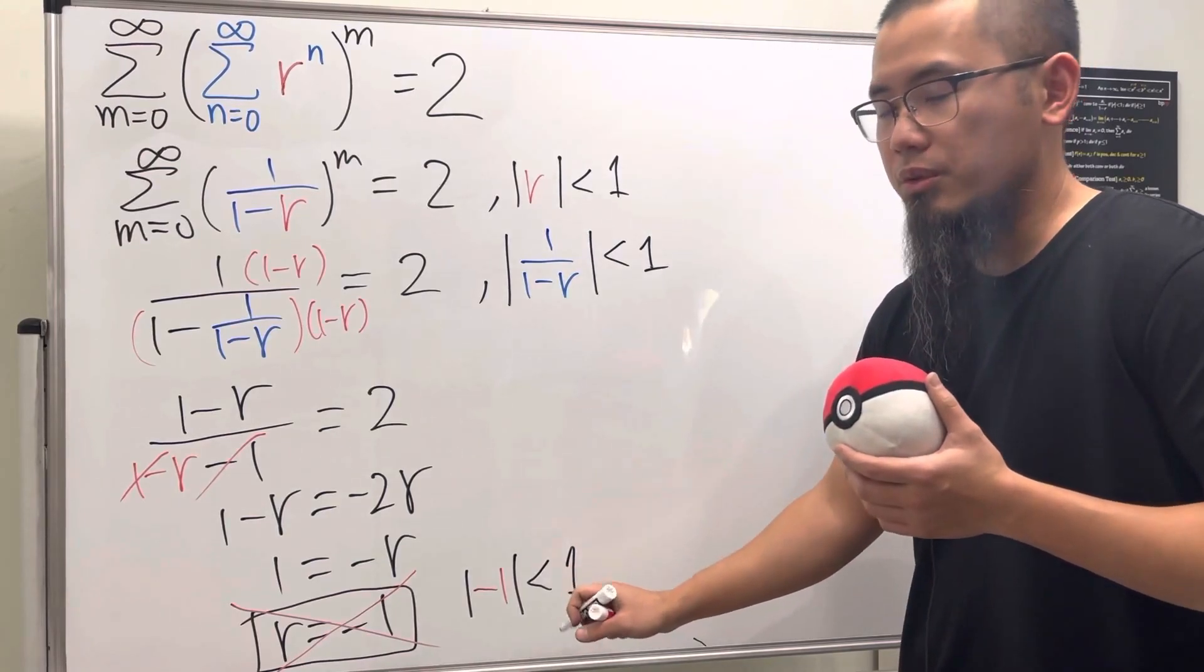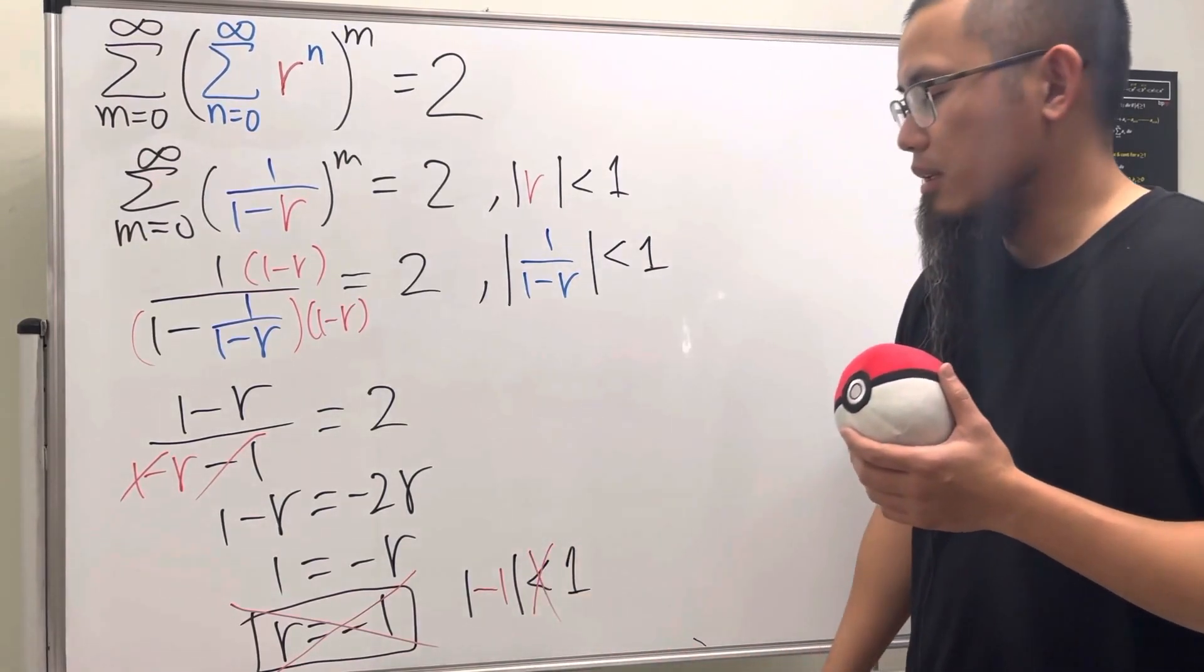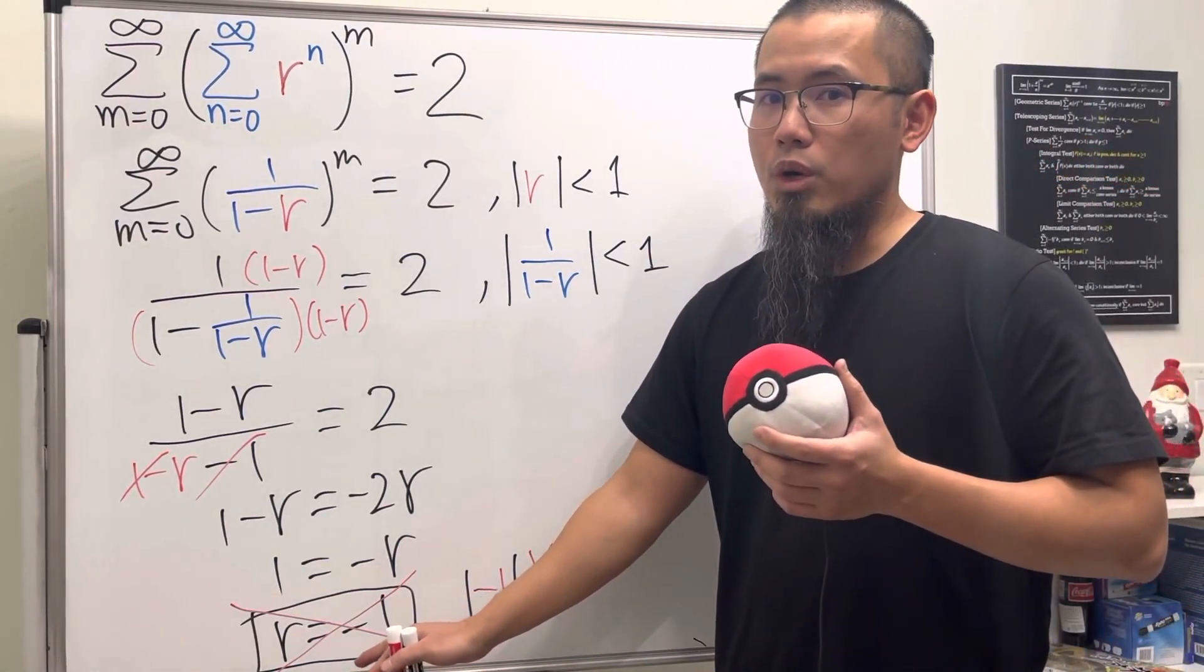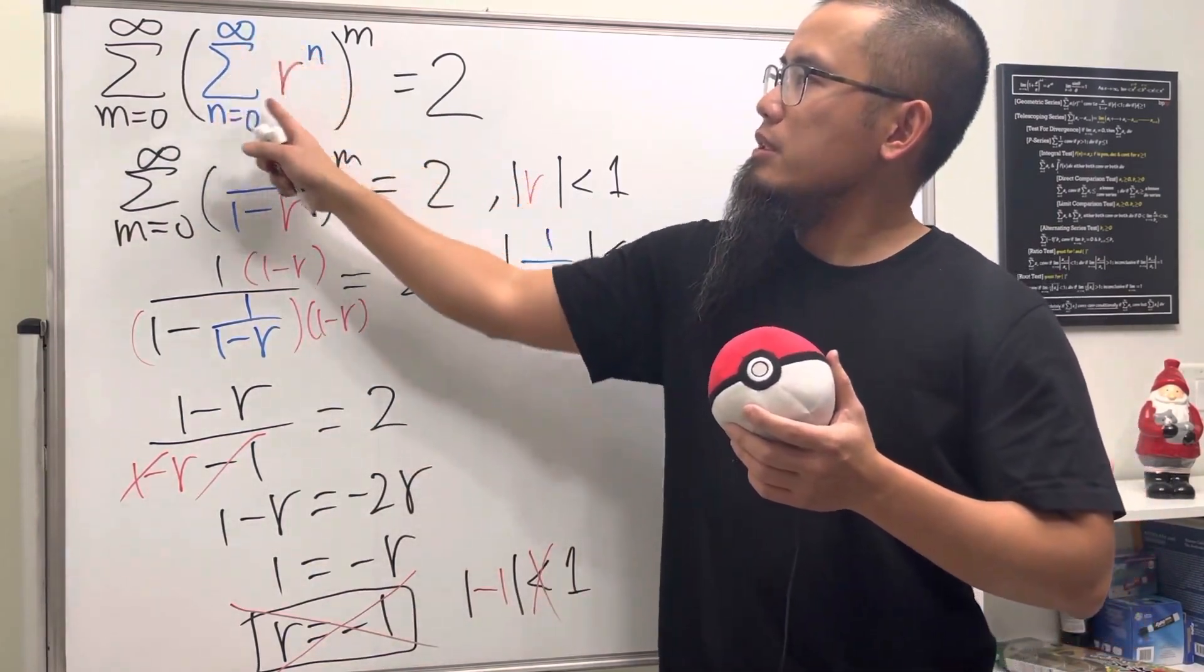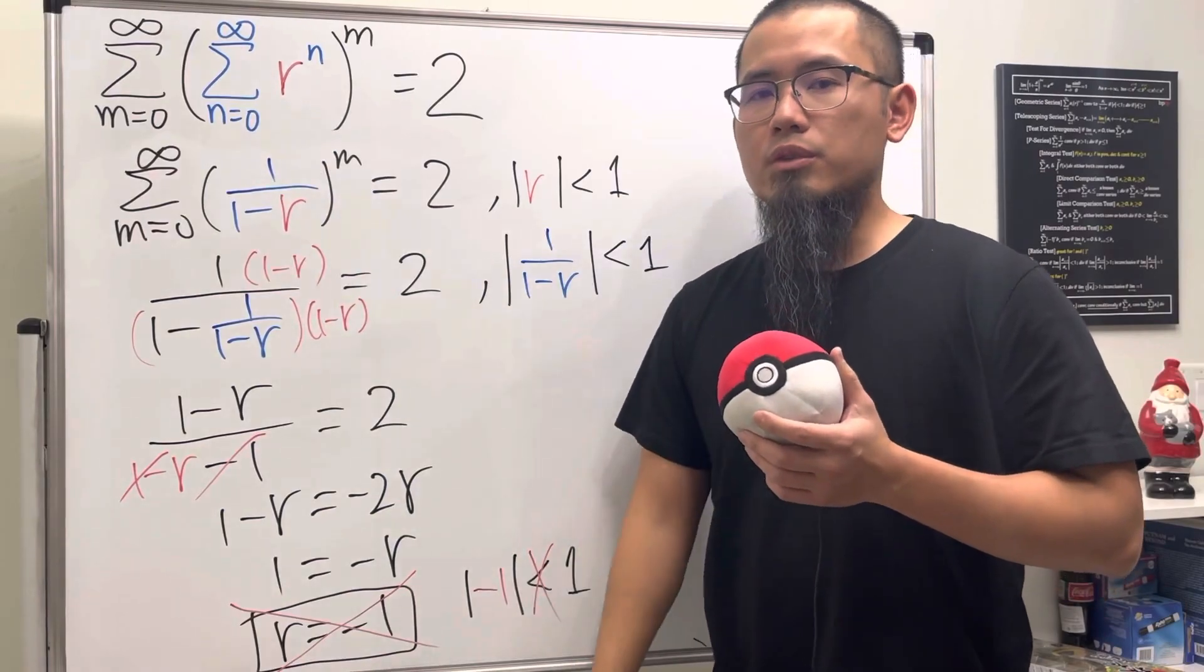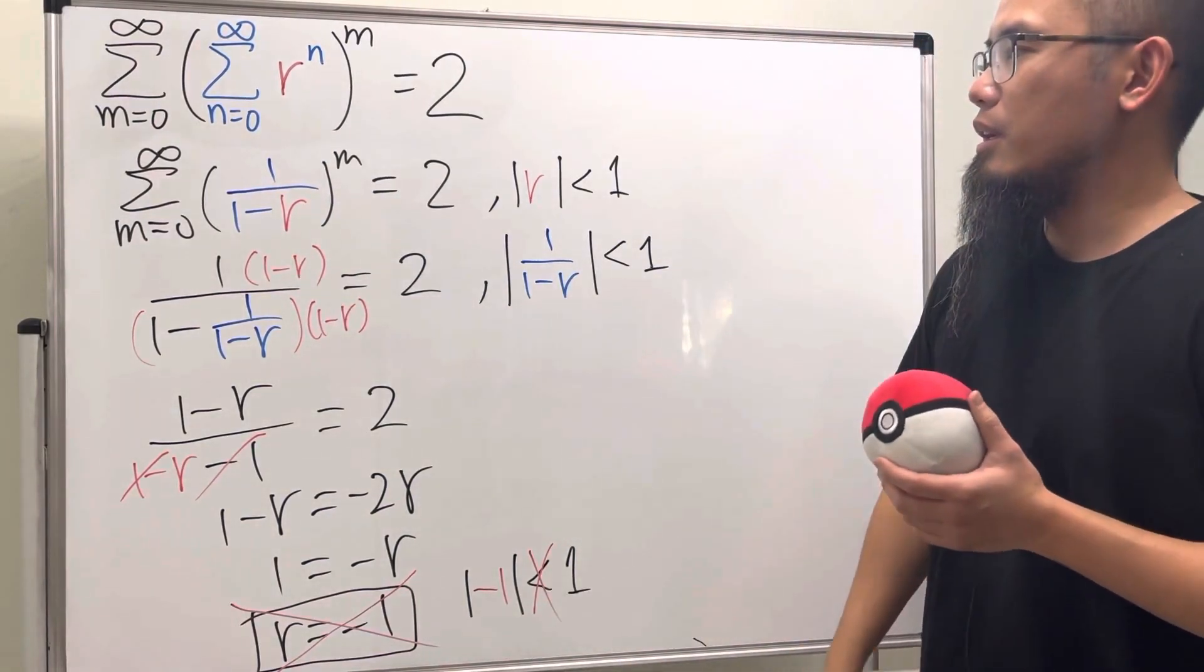This is false. Thus this is not going to work, meaning that when you put negative one into the blue series right here, it's not going to converge. So there's no chance. So in fact, the answer for this right here is that it has no solution.